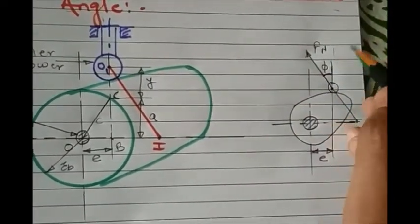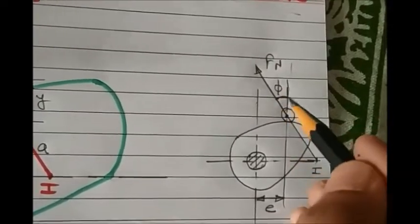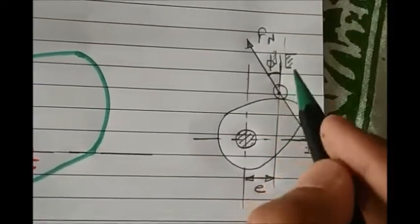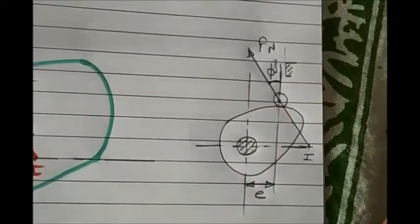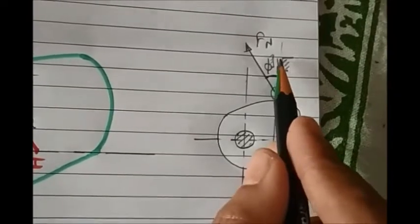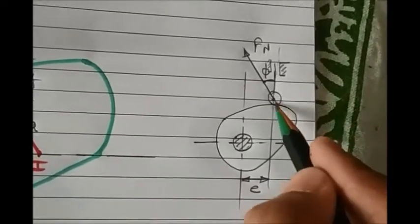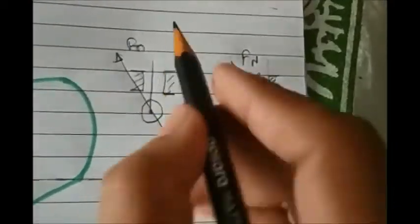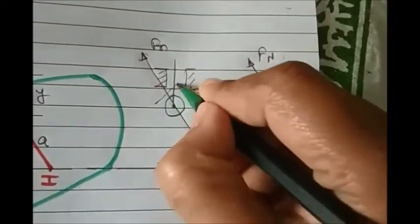This line of force exerted by the cam on the follower is very useful in overcoming the output load. The component of the force along the line of motion of the follower is kept as low as possible to reduce the friction between the follower and the guides. When this force is exerted at the point of contact by the cam on the follower, the follower tilts into the guide.